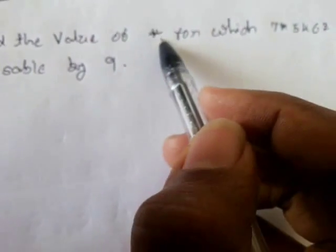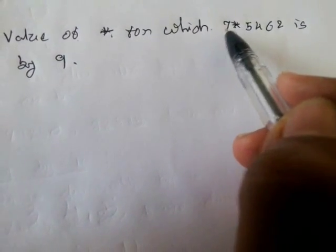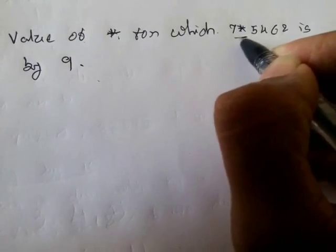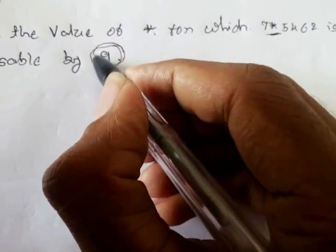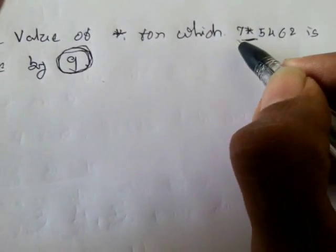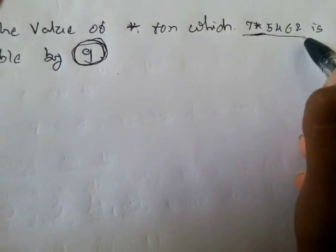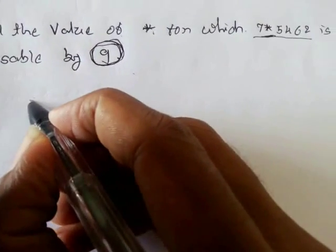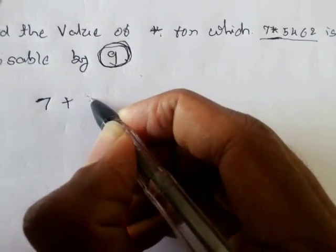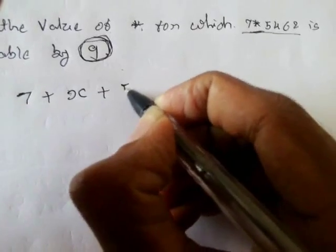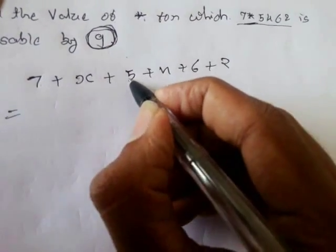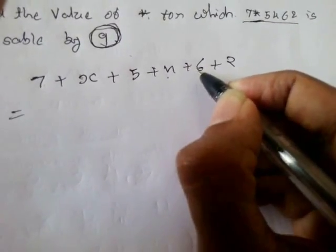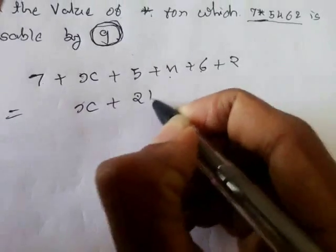The next question says: find the value of star for which 7★5462 is divisible by 9. We know the rule — the sum of digits should be divisible by 9. Putting x in place of star: 7 plus x plus 5 plus 4 plus 6 plus 2 gives us x plus 24.